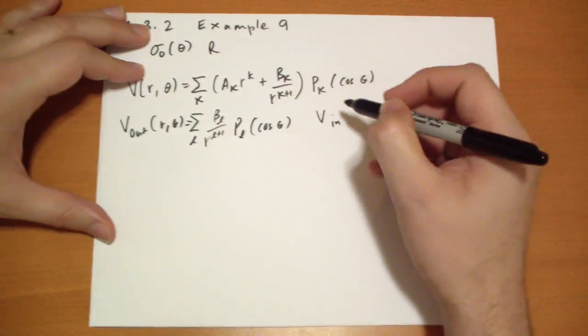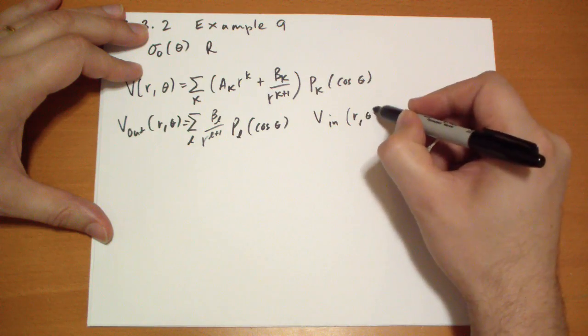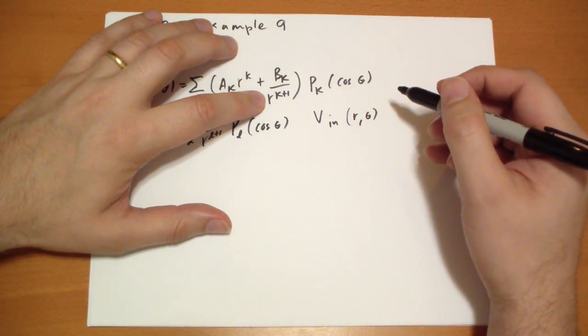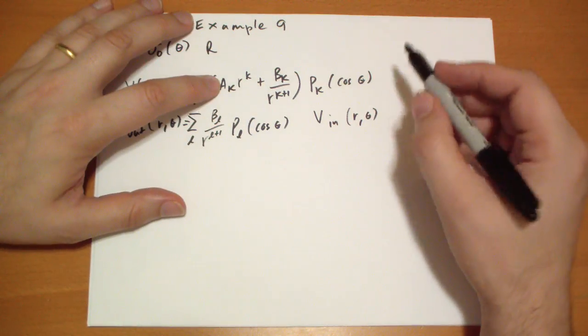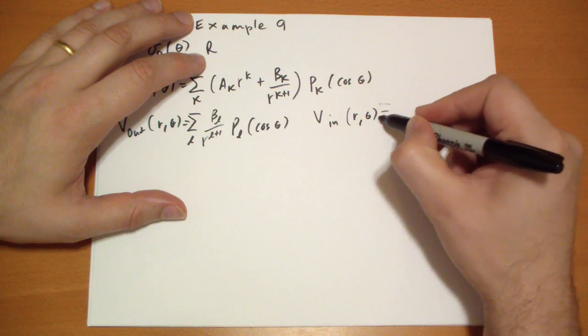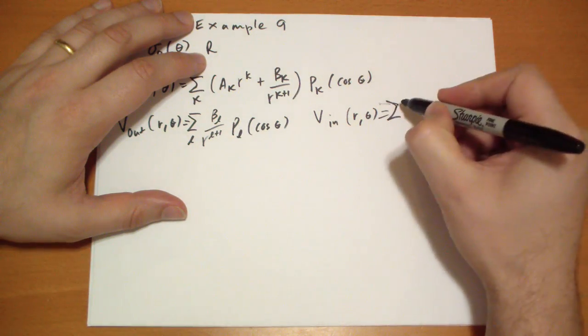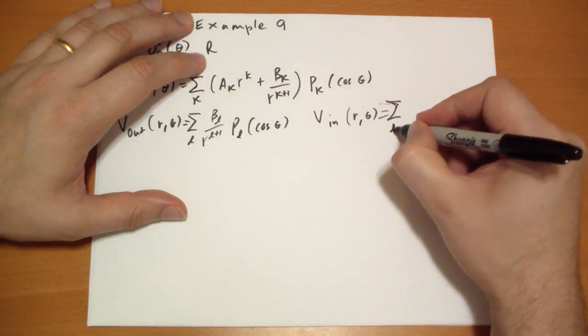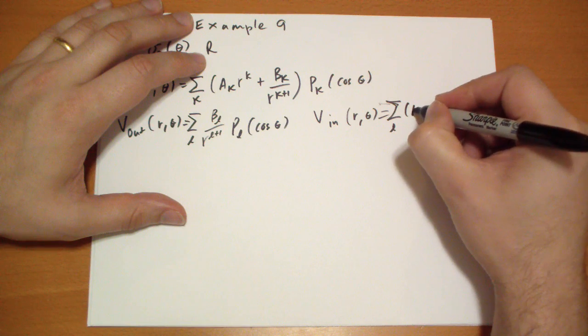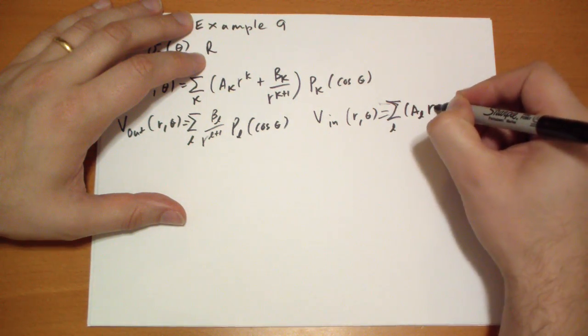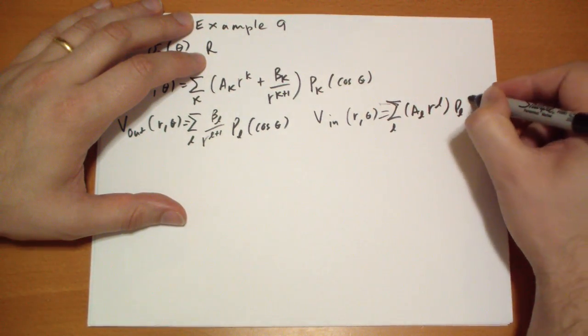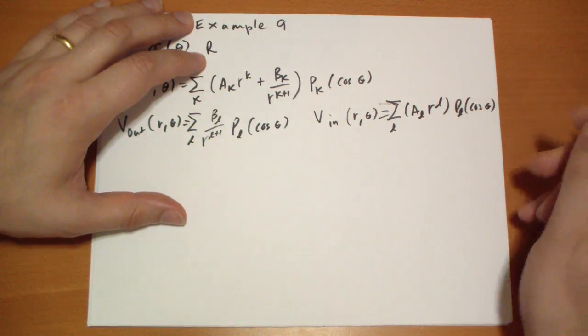And inside, V(r,theta), well, this term at the origin is going to blow up, so we have to keep A_L. That is the sum of A_L*R^L*P_L(cos theta).